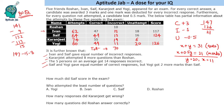It is given that Karanjeet attempted 8 more questions than Roshan, so Roshan attempted 66 questions. 10 are incorrect, so 56 will be correct, and 14 will be unattempted. We could calculate the marks as well, although it is not asked, so there's no need.